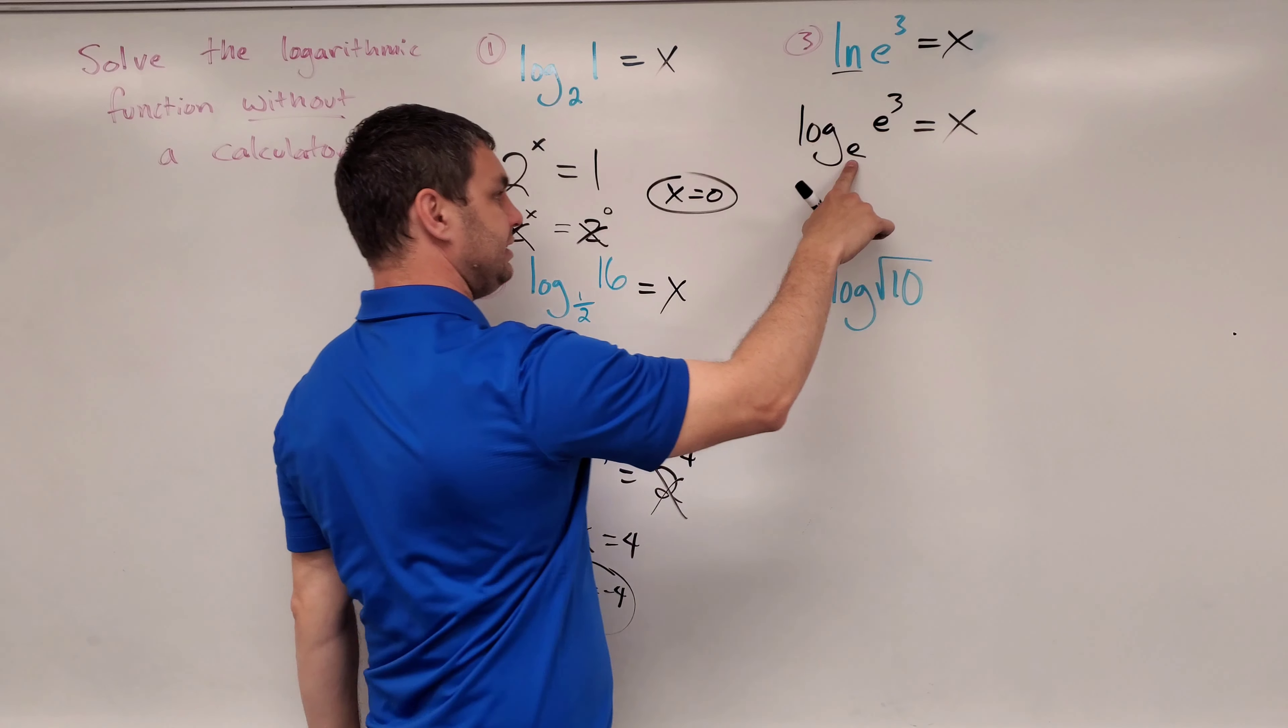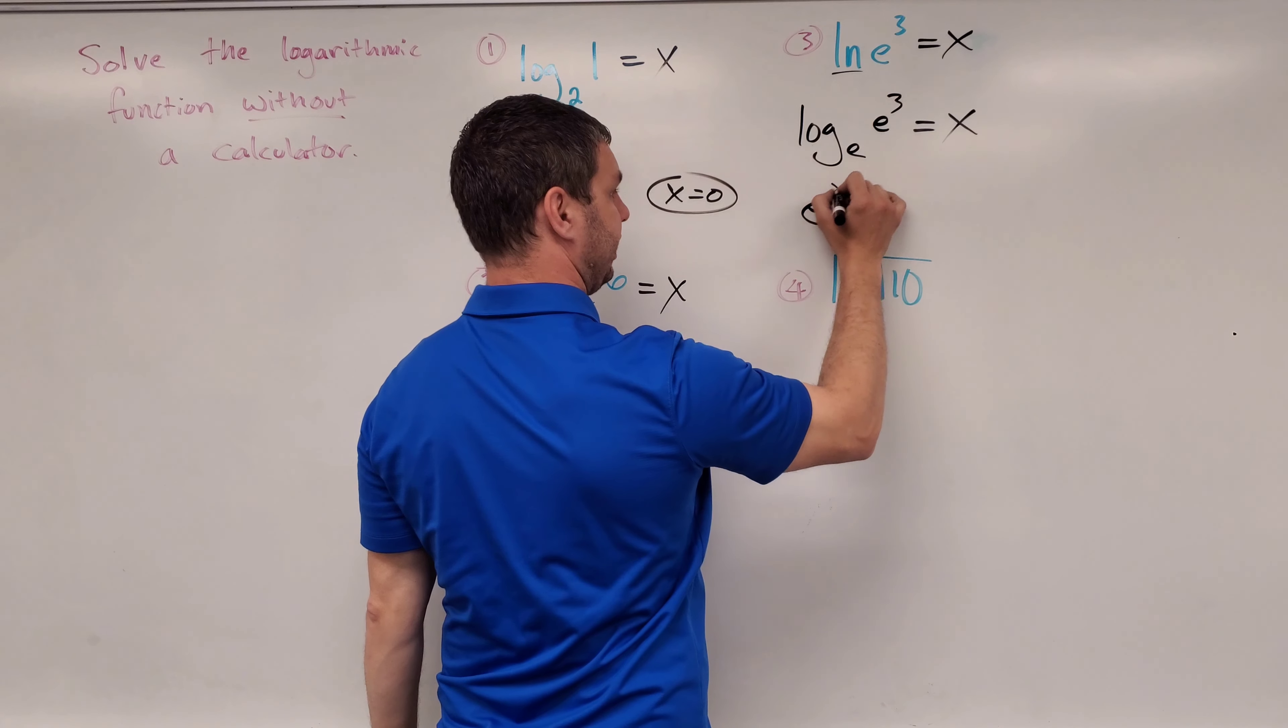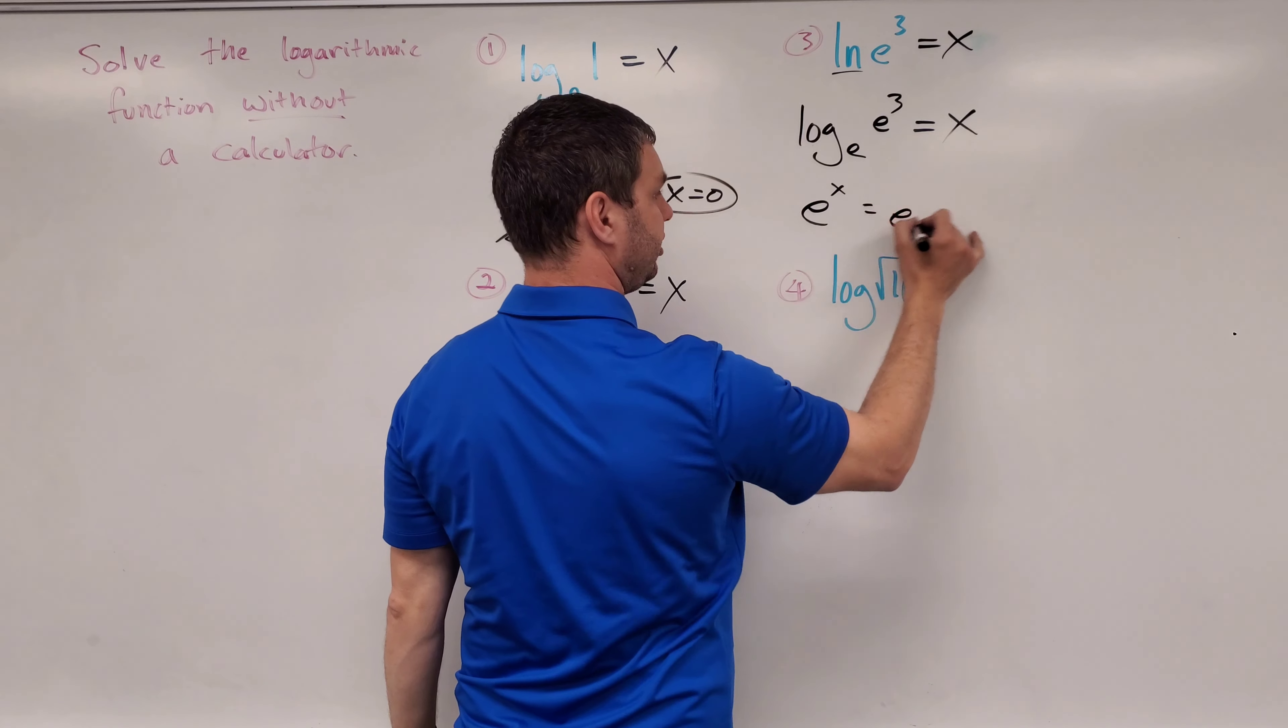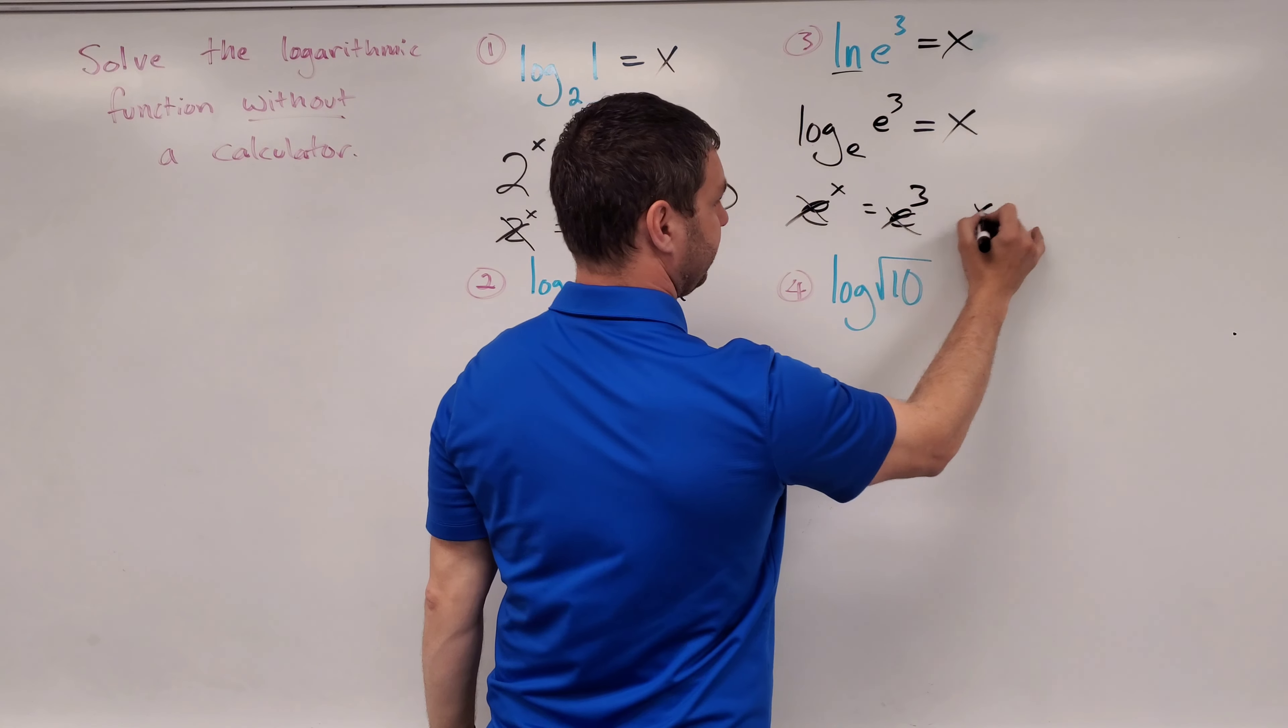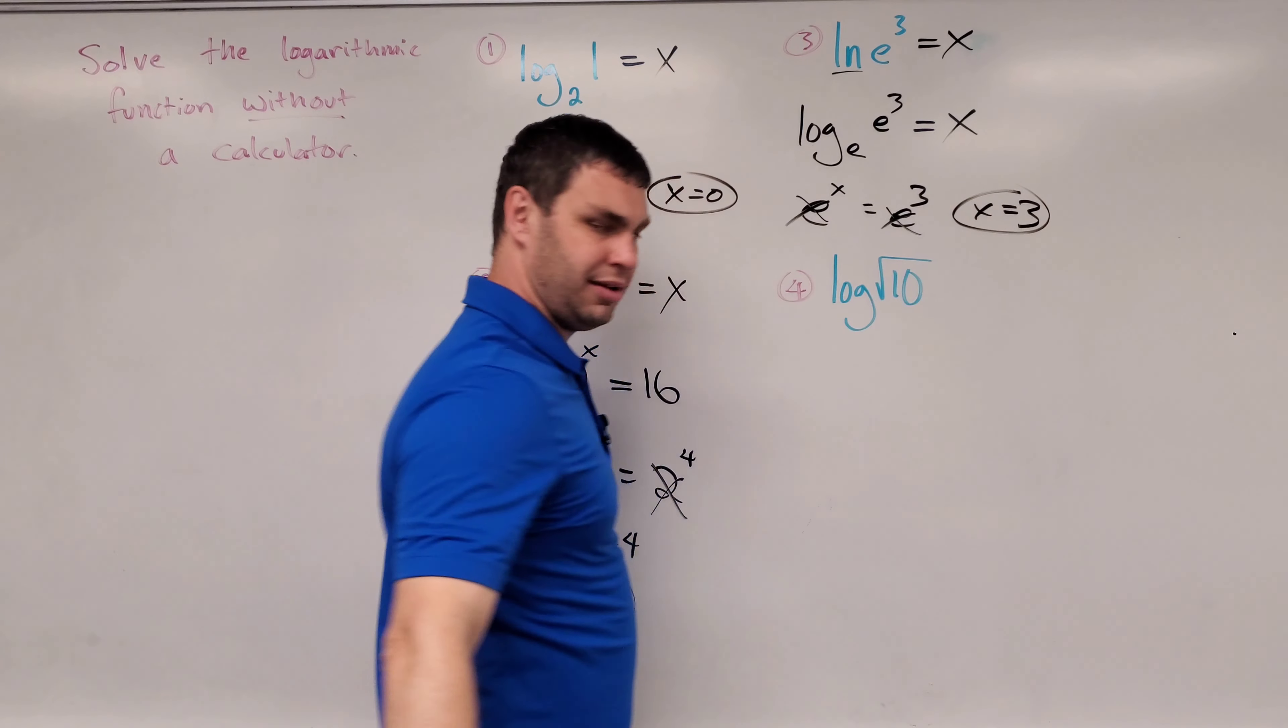So the base I'm using is e. So I can say e raised to the x equals e raised to the 3rd. And now both of those bases are e, so they cancel. Leave me with x equals 3.